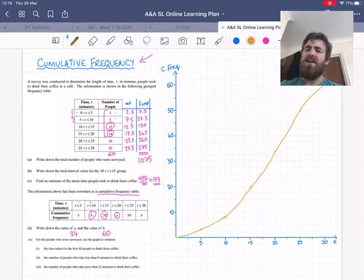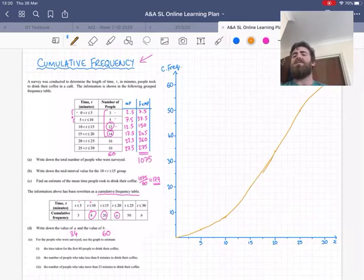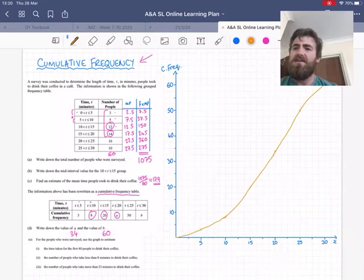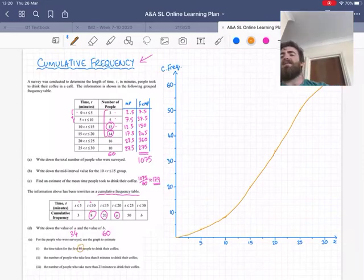Now once we have this, we're going to be able to have an estimate of pretty much all of the cumulative frequencies. Because in our table we had 6 values for cumulative frequency, but now we have a continuous curve that will give us a platform to estimate any cumulative frequency. So we can see the first question here. It wants us to say the time taken for the first 40 people to drink their coffee. So I find 40 on the cumulative frequency axis, the y-axis. And our curve should tell us a decent estimate for how long those 40 people took.